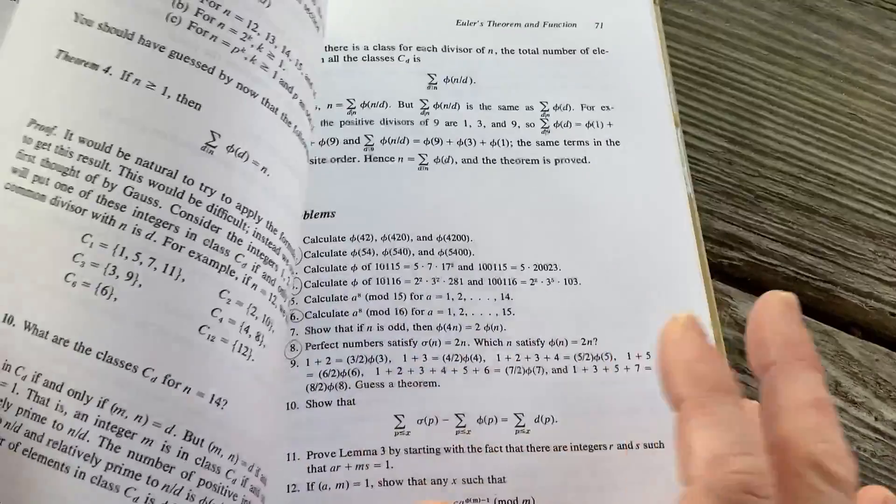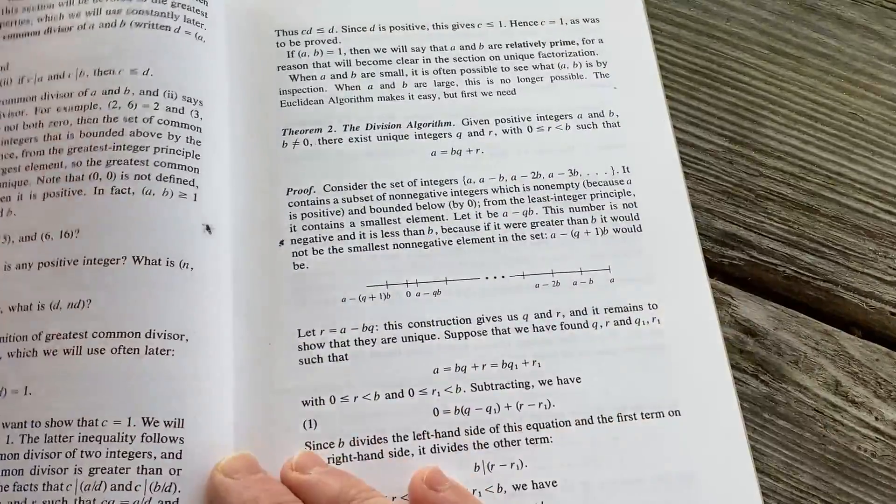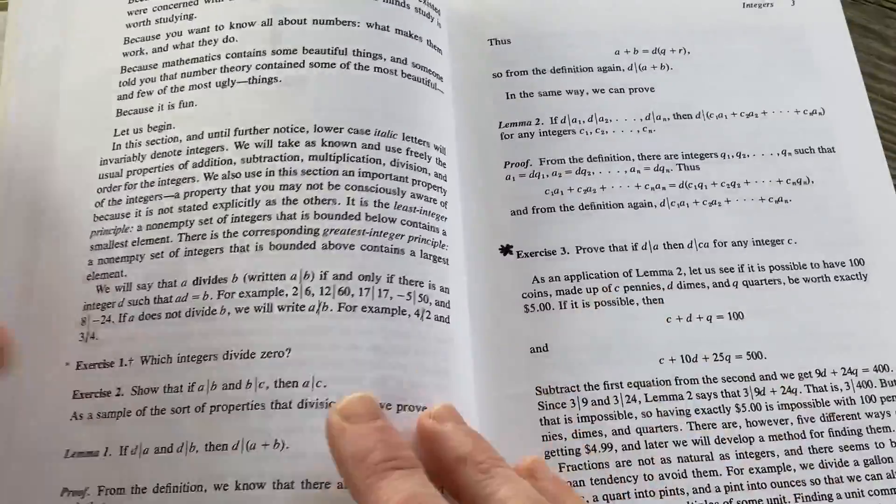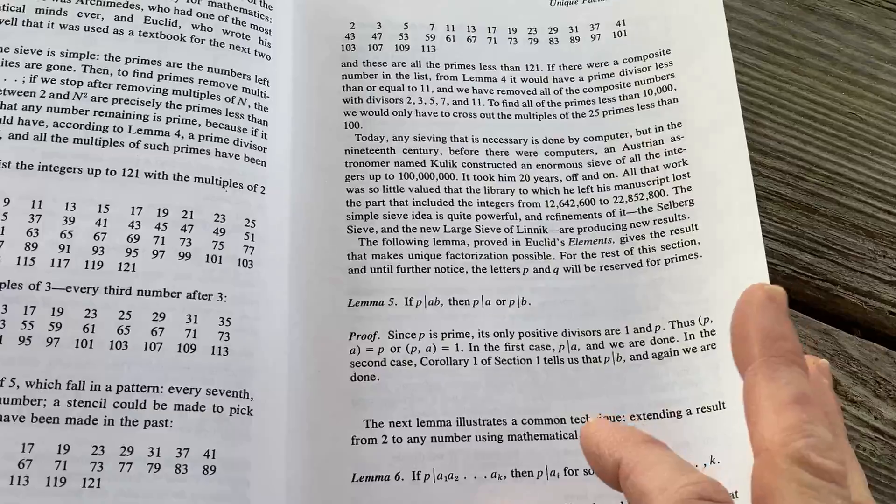I think it's a solid book for self-study because it has so much help in the back of the book. You can see the beginning is very easy. It starts off pretty simple, but you still have to know how to write proofs. If you don't know how to write proofs, you're kind of out of luck with something like number theory.